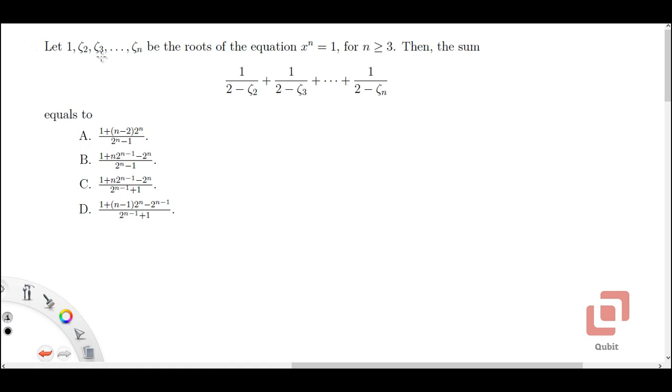Let 1, zeta_2, zeta_3, ..., zeta_n be the roots of the equation x^n = 1 for n greater than or equal to 3. Then, the sum 1/(2 - zeta_2) + 1/(2 - zeta_3) + ... + 1/(2 - zeta_n) equals to. And we have 4 different options with us.